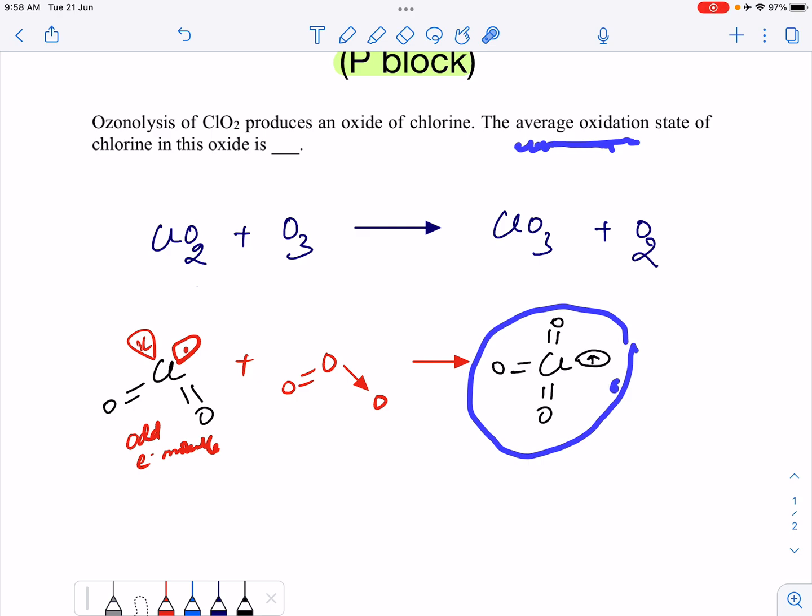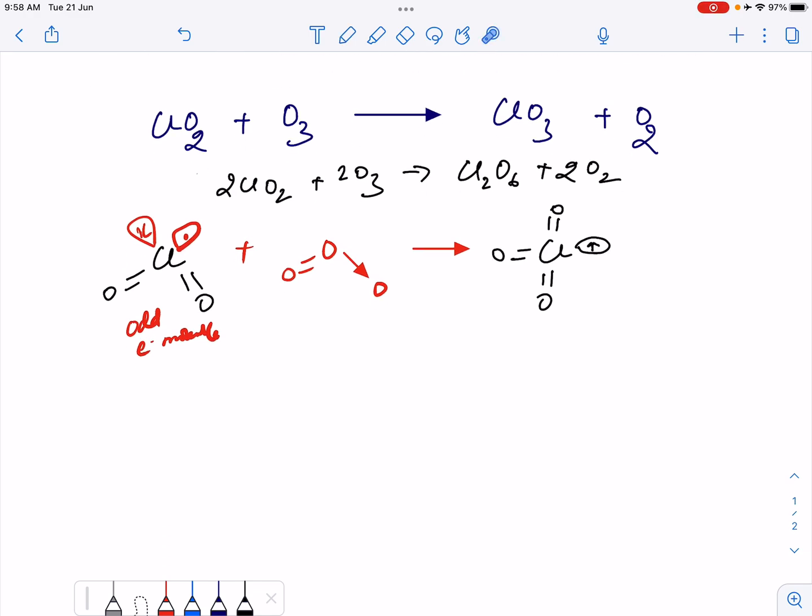When you try to balance this equation, this equation will come out to be 2ClO2 plus 2O3, it will form 2ClO3, that is dimer form of this Cl2O6, and then we have 2O2. So what we see, this compound undergoes dimerization.